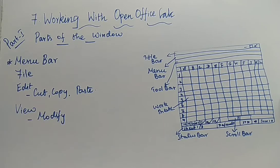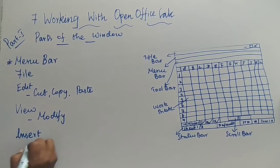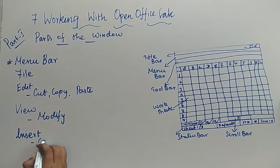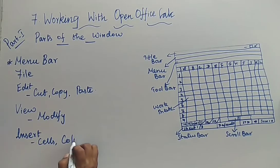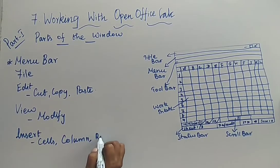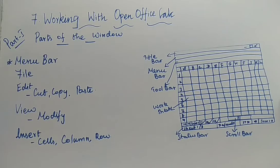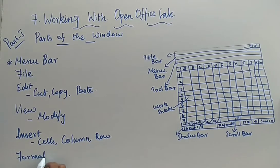Everything needed to modify the environment is available under the View menu bar. The next one is Insert. Insert means if you are going to insert cells, some column, or row — everything you can insert, and these are available under the Insert menu. And the next one is Format. This is going to have the formatting features — simple formatting features like bold, italic, and all. Those features are available under the Format menu.